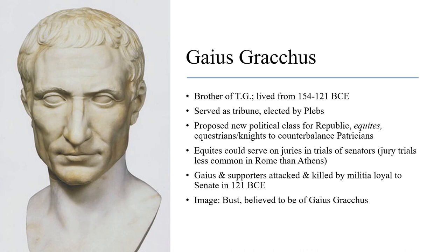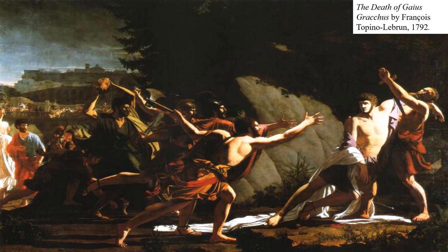That was what Gaius wanted — to balance the power of the Senate. Naturally the Senate was not a fan of Gaius, and he and his supporters were eventually driven out of Rome. They were killed by a militia loyal to the Senate in 121 BCE. Some accounts say Gaius chose to commit suicide rather than be killed. Either way, the Senate wanted Gaius Gracchus gone, just as they hadn't liked his brother Tiberius.